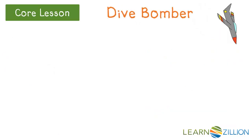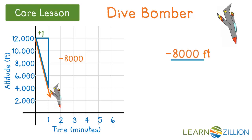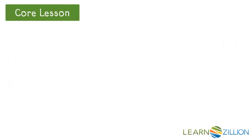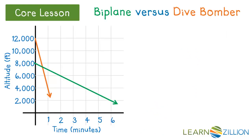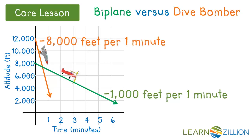A dive bomber would lose altitude a lot faster. After 1 minute, plus 1, the dive bomber loses 8,000 feet — negative 8,000. When we calculate, negative 8,000 feet per 1 minute gives us our rate of change. The negative tells us that the line is going down. When we compare the negative slopes of a biplane and a dive bomber on the same graph, you can see there is fast down and slow down.